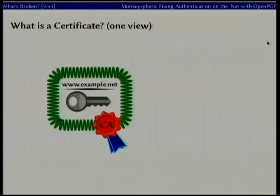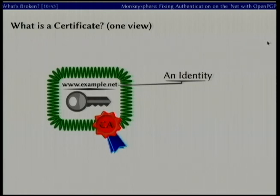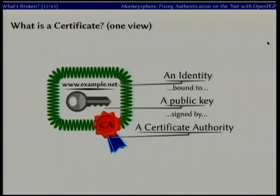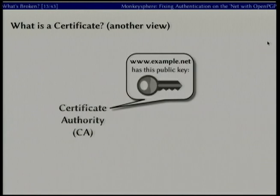A certificate is an identity — in this case a URL — bound to an actual piece of public key material, and this package is certified by someone. In the X.509 model, that's a certificate authority. In OpenPGP, it's yourself — you sign your own keys — or someone else can sign your keys. Another way to look at this: the certificate authority is asserting that this particular identity has a given public key. A concrete example is VeriSign identifying a given server.